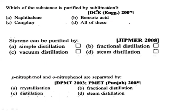Which of the following substances is purified by sublimation? Options: naphthalene, camphor, benzoic acid, or all of these. The answer is all of these — naphthalene, camphor, and benzoic acid can all be purified by sublimation.